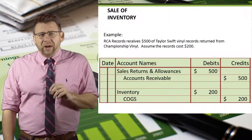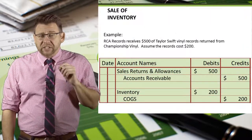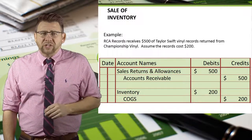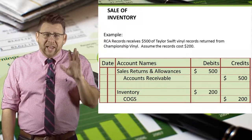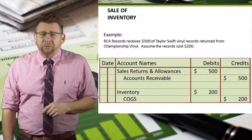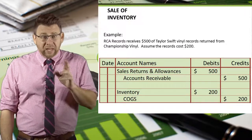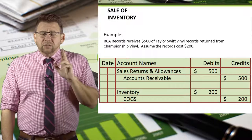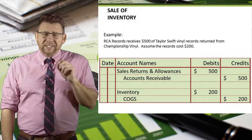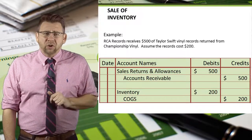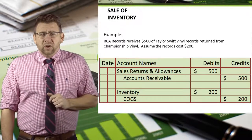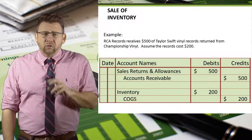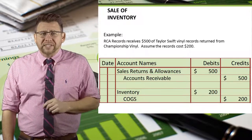So when RCA Records receives the Taylor Swift records back, it debits sales returns and allowances and credits accounts receivable for $500 — the price of the records. It also debits inventory and credits cost of goods sold for $200, which is the assumed cost of those records when they are returned to inventory stock.